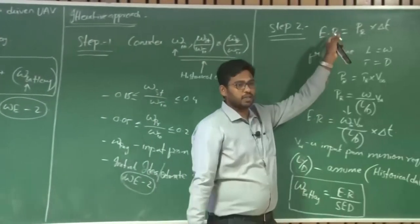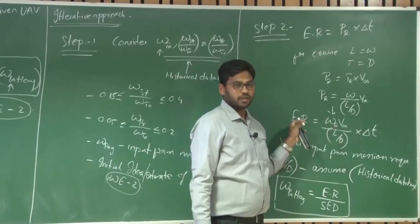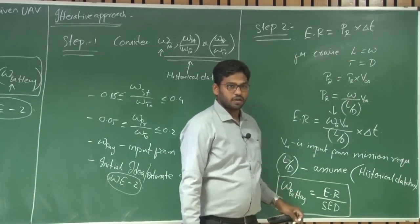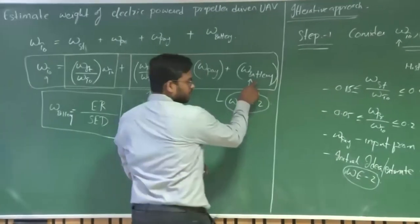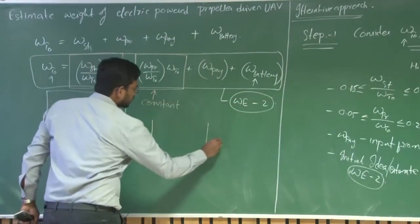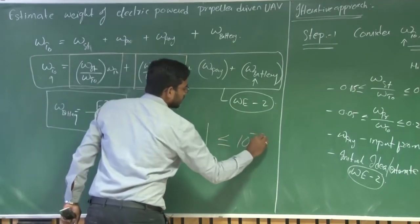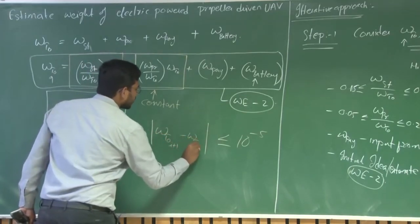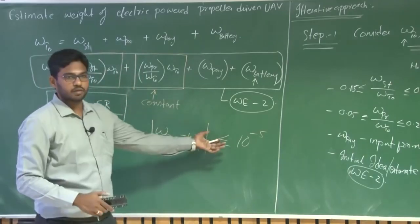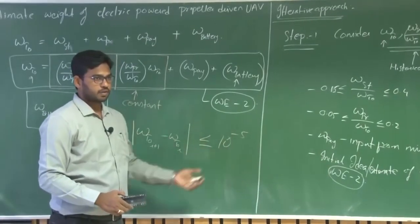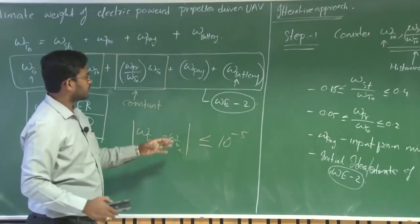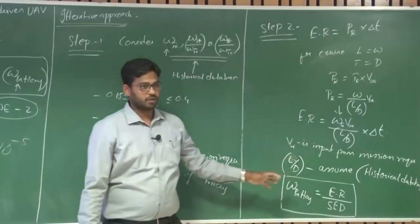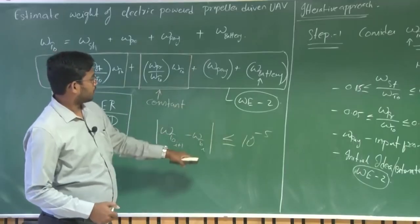We are adapting this equation to the new UAV by updating the battery weight. Once you have updated the battery weight, the overall takeoff weight changes again. For the new takeoff weight, the energy requirement changes again, because energy requirement is a function of takeoff weight. Again estimate what is the battery weight. Update this equation with this battery weight. You need to keep updating until this cost function — W takeoff(i+1) minus W takeoff(i) — becomes less than or equal to some defined error.